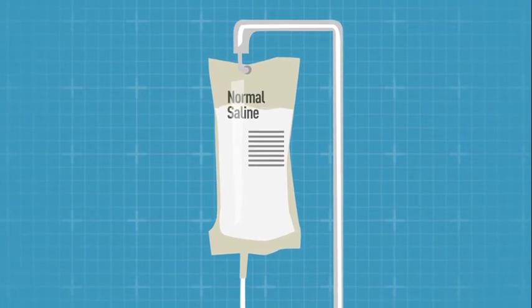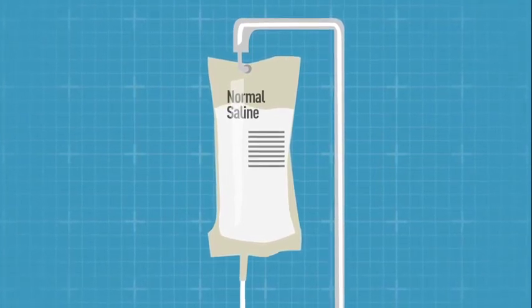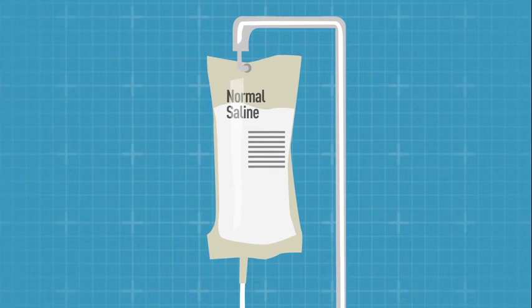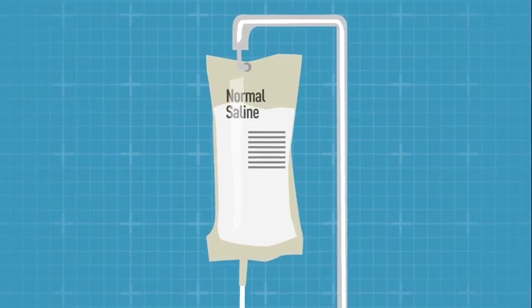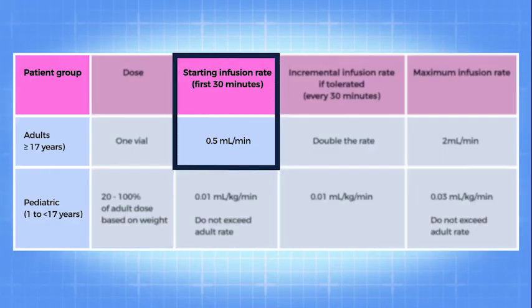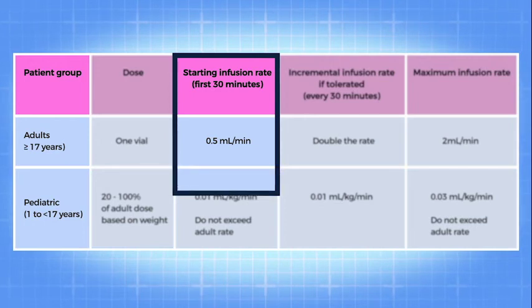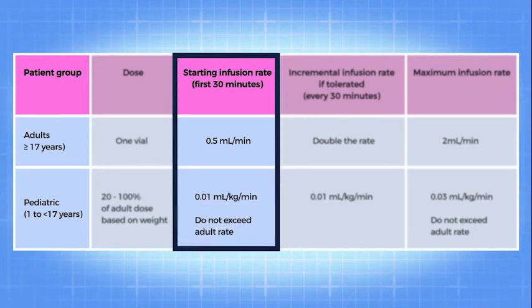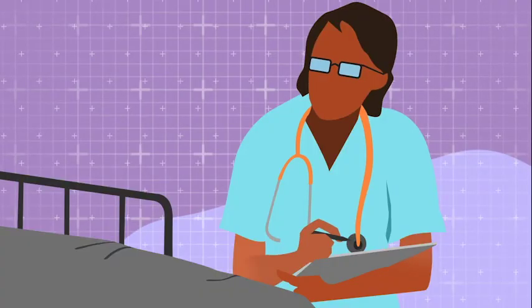Administer the diluted antitoxin solution by slow IV infusion, starting with the recommended rate for the patient's age. For adults age 17 and older, this is 0.5 milliliters per minute. For children, it is 0.01 milliliters per kilogram per minute. Do not exceed the adult rate.